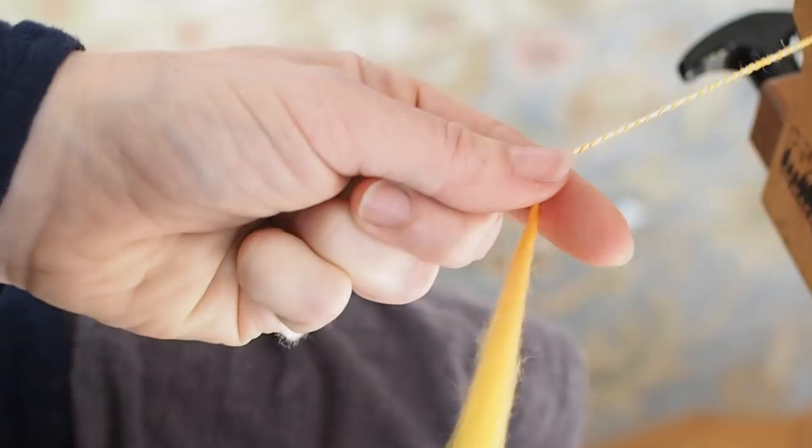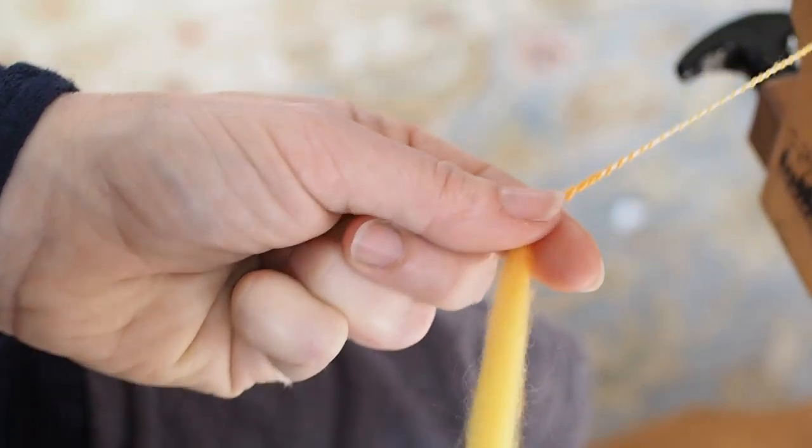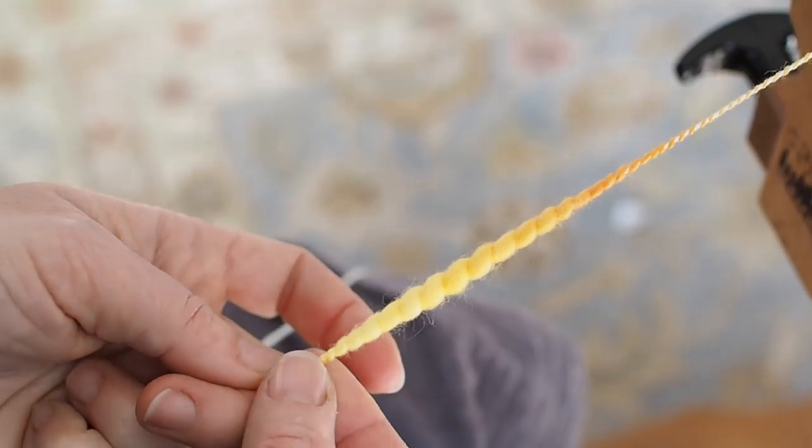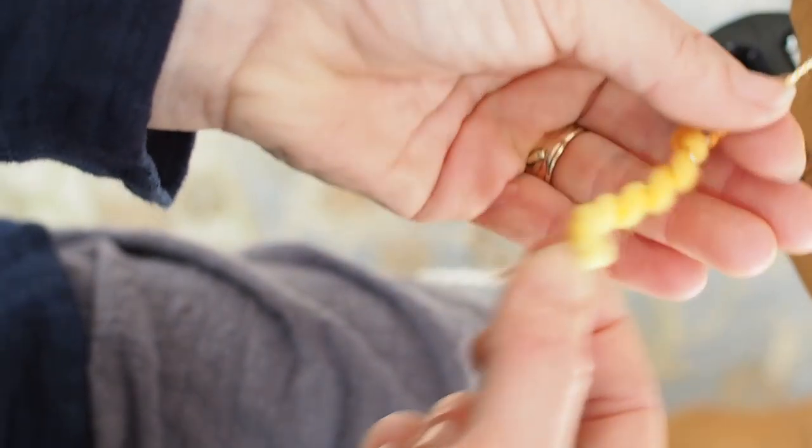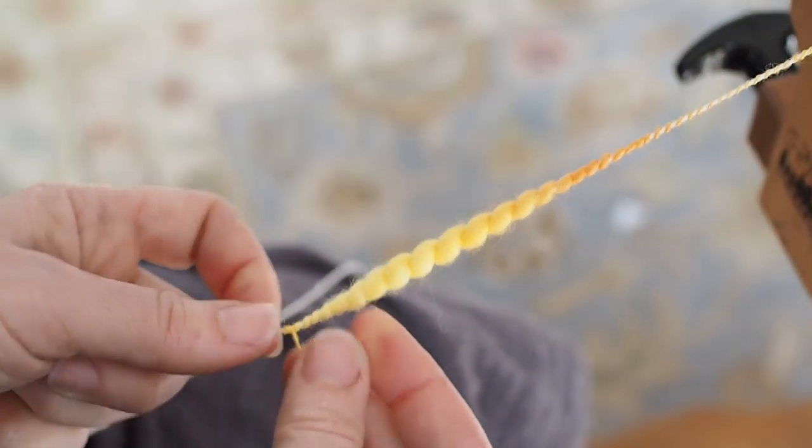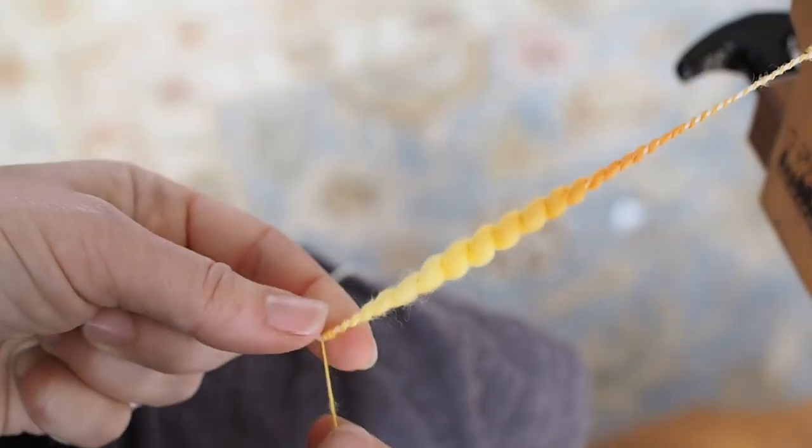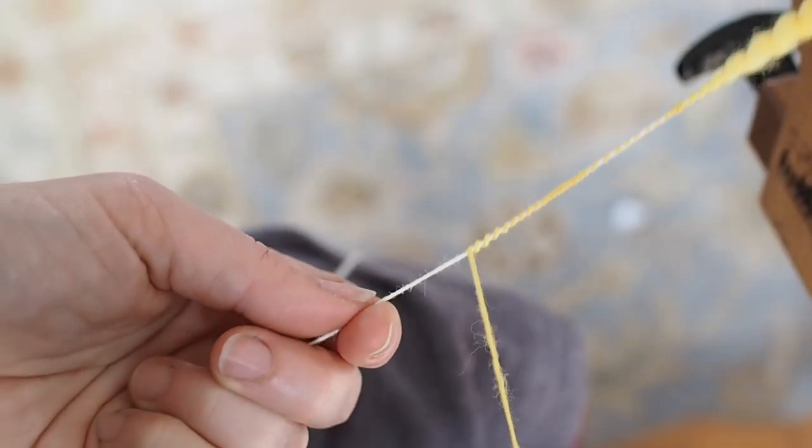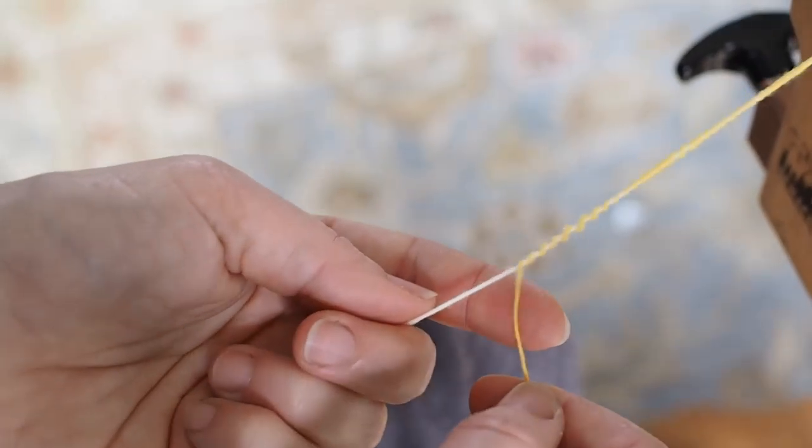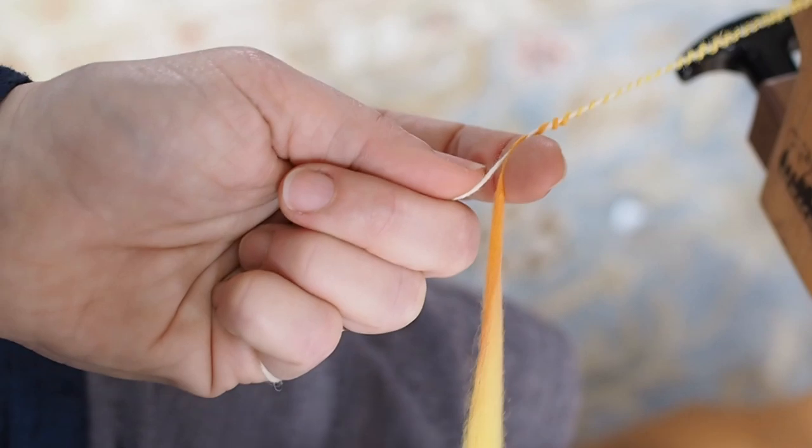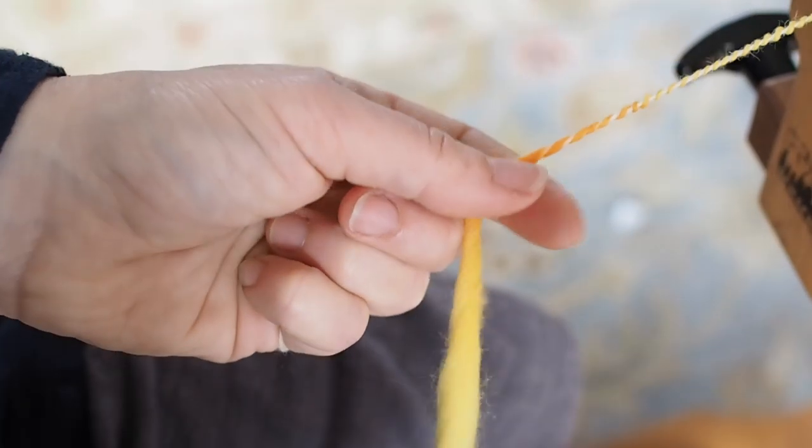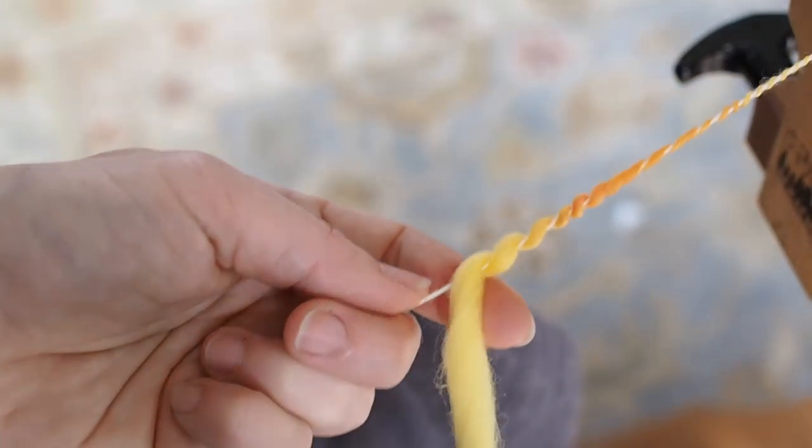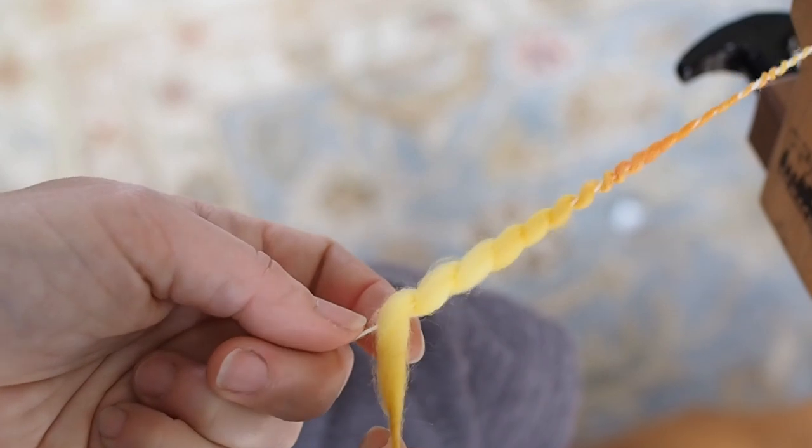If you spun your original yarn s twist, then you're going to want to core spin it z twist in the other direction because if you don't it's going to become so crimped that it'll just curl back up on itself. That's also another reason why you're going to want to twist, give a little twist to your puff before you get it started on your core yarn because if you don't it's going to really come undone and it won't fluff up as much as it should or coil up as much as it should around your core.